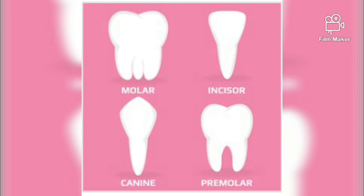Now we will start types of teeth. There are four types of teeth in our mouth cavity. These are the incisors, canine, premolars, and molars.